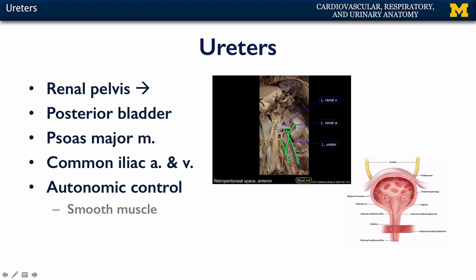As the kidneys are retroperitoneal, so are the ureters. What's interesting is, as they descend from the abdominal cavity into the pelvic cavity, they're usually in the vicinity of the branching of the external and internal iliac vasculature.